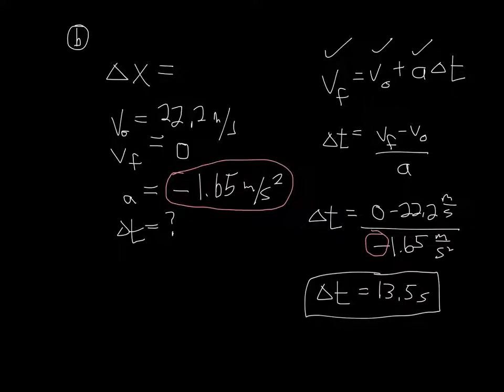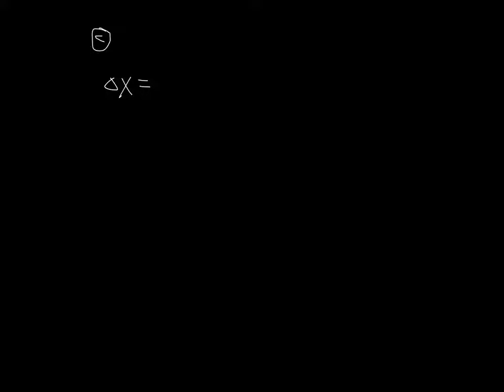Physics problems are often very multi-part. For part C, in emergencies the train can decelerate more rapidly, coming to rest from 80 kilometers per hour in 8.0 seconds. What is its emergency deceleration in meters per second squared? Setting up the chart: change in position is unknown, initial velocity is 22.2 m/s, final velocity is 0, acceleration is unknown, and delta t is given.